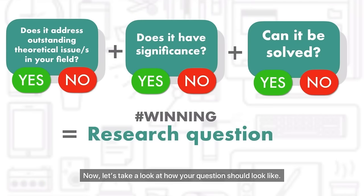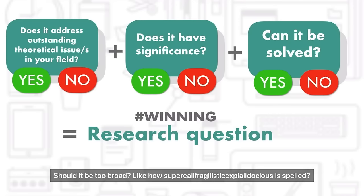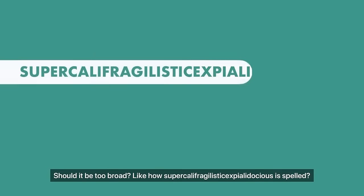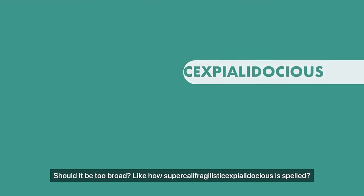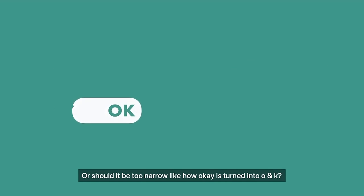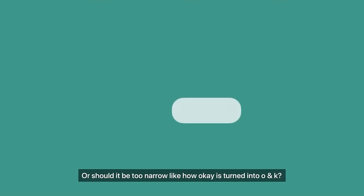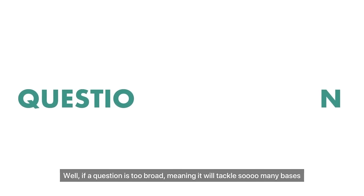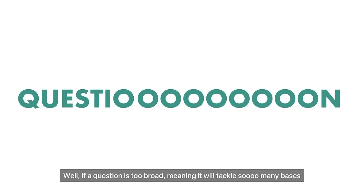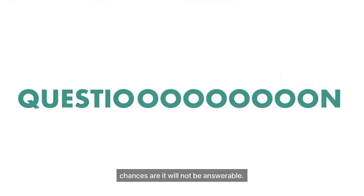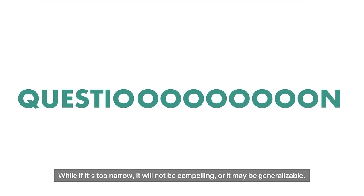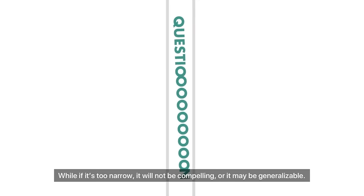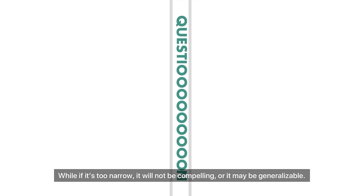Now let's take a look at how your question should look. Should it be too broad, like how 'supercalifragilisticexpialidocious' is spelled? Or should it be too narrow, like how 'okay' is turned into 'onk'? If a question is too broad, meaning it will tackle so many bases, chances are it will not be answerable. While if it's too narrow, it will not be compelling, or it may not be generalizable.